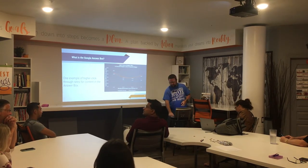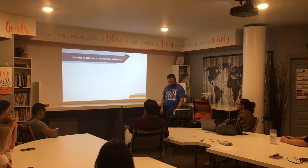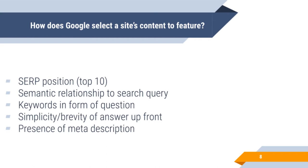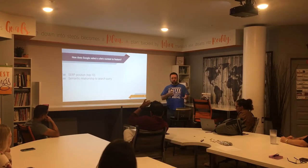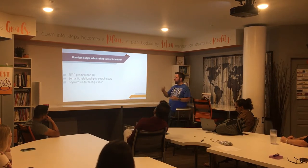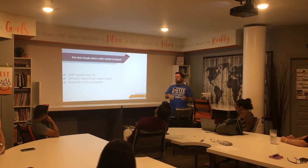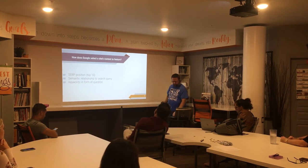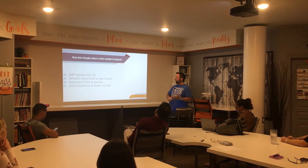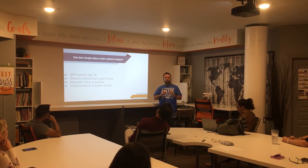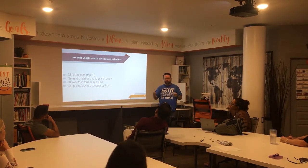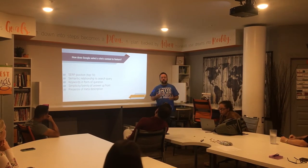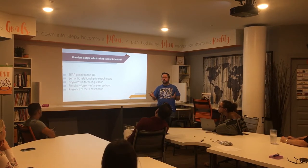So how does Google select a site's content to feature? First, search position — if you're on page one, top ten, you're more likely to get in there. Another factor is a semantic relationship to the search query — your site has to have related content, related keywords in the form of a question. If you match that question in your content you'll show up better. And brevity — if you can answer the question in 50 to 100 words you're more likely to show up.